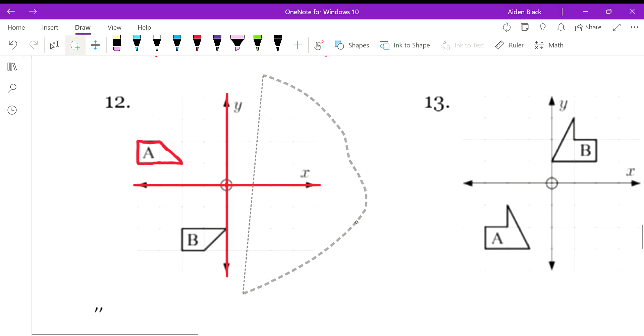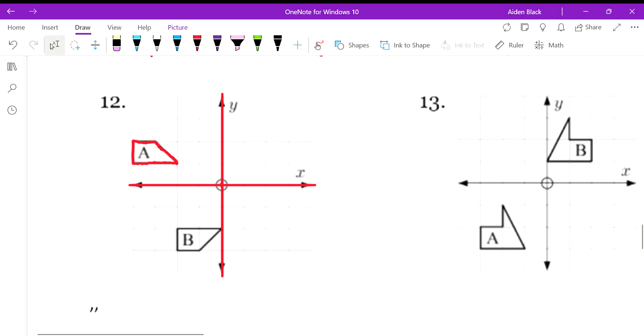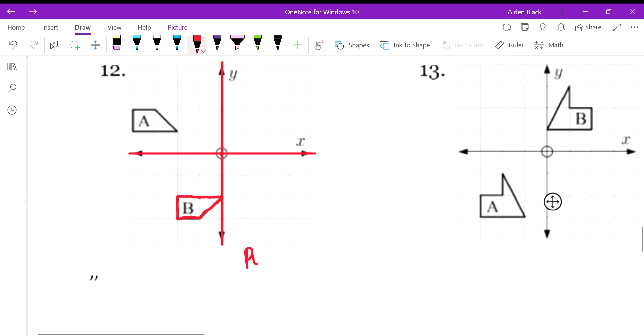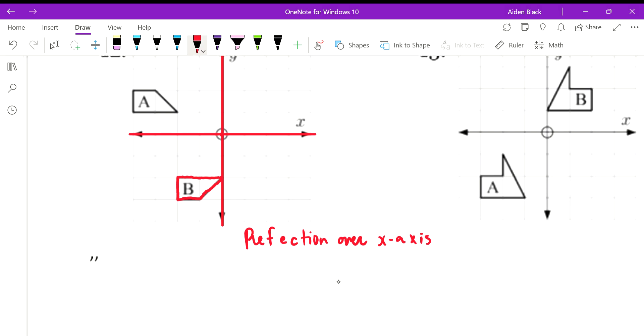Let's start out with a reflection over the x-axis. So I'm going to flip it vertically. And then it looks like the rest of the way to get there, where all I have to do is translate it. Boom. Just like that. So we know it's a reflection over the x-axis.